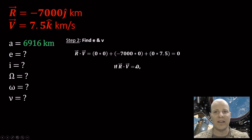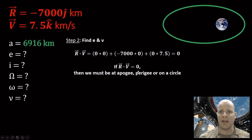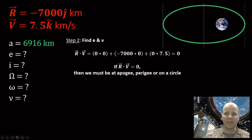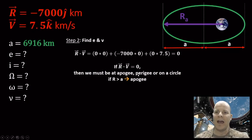R and V being perpendicular only happens on an elliptical orbit at two special positions — apogee or perigee — or everywhere on a circular orbit. To determine which, I'll sketch a picture. On an elliptical orbit with Earth at one focus, if we draw the semi-major axis A: a current position R larger than A means we're at apogee; smaller than A means perigee; equal to A means a circular orbit.